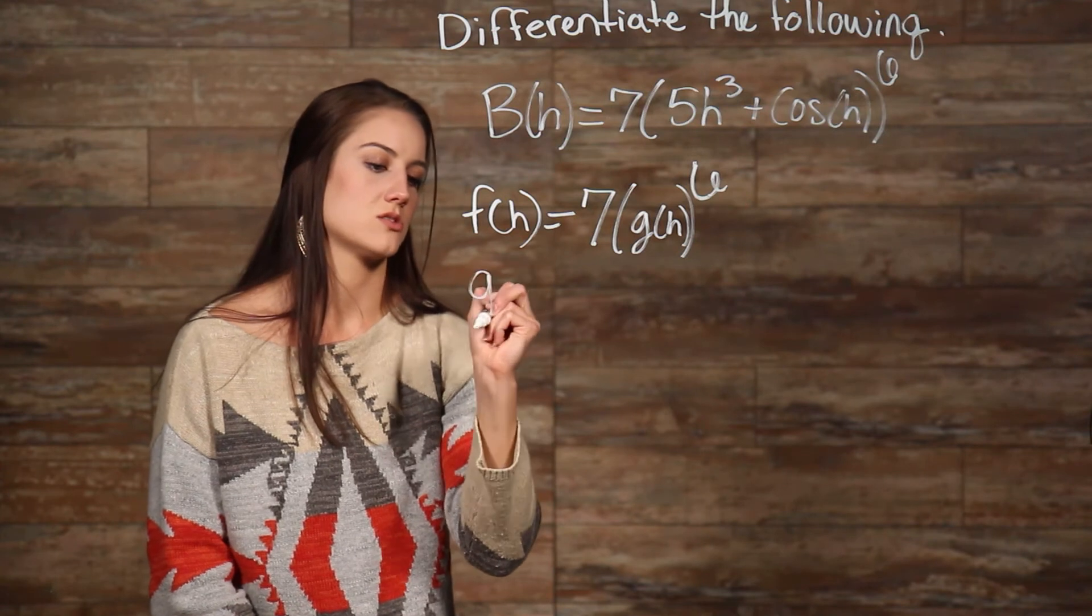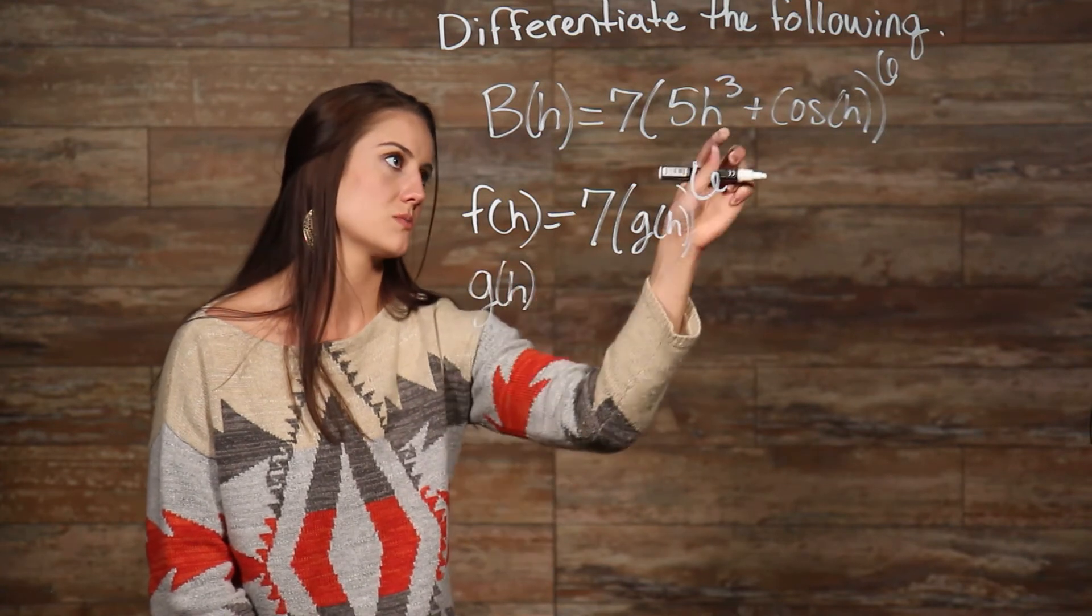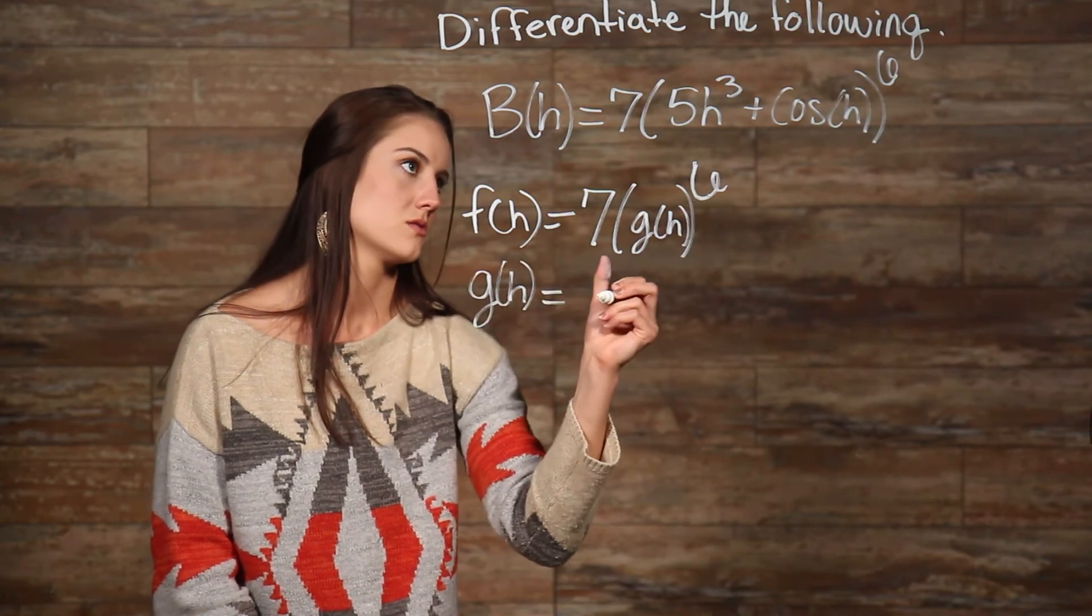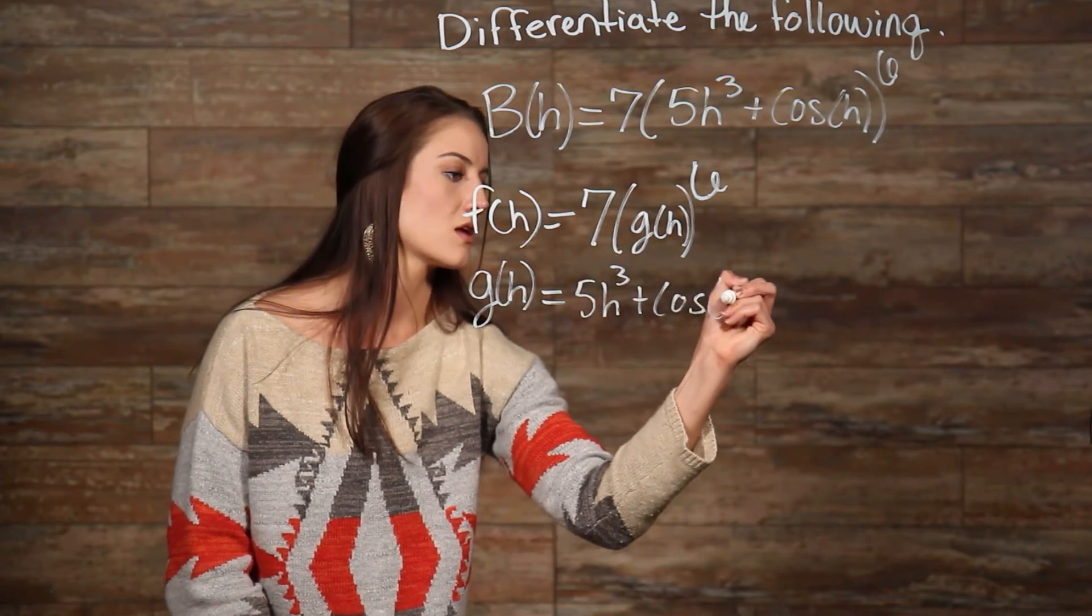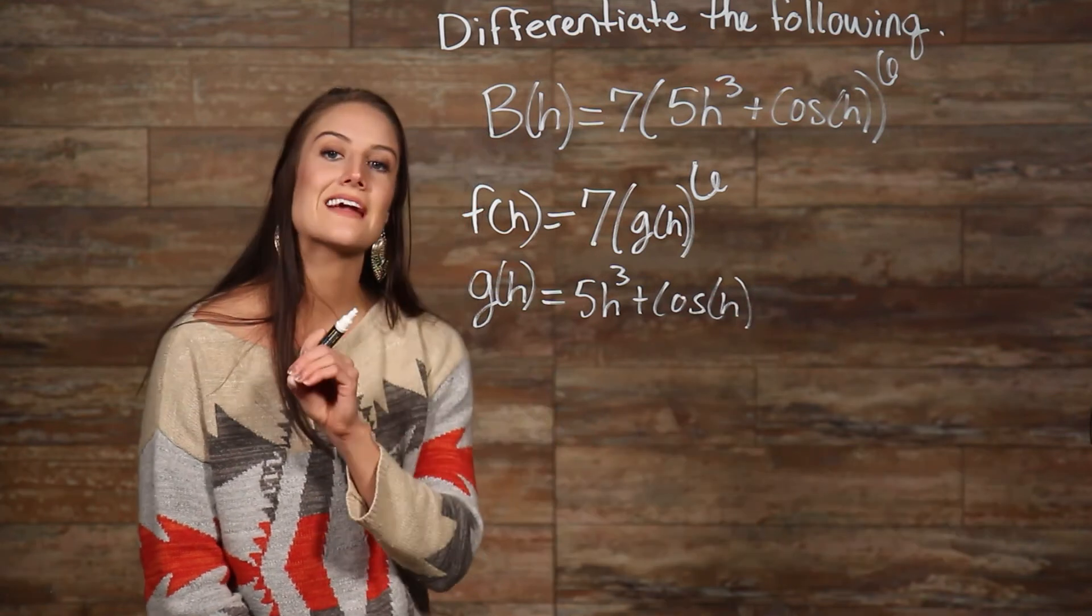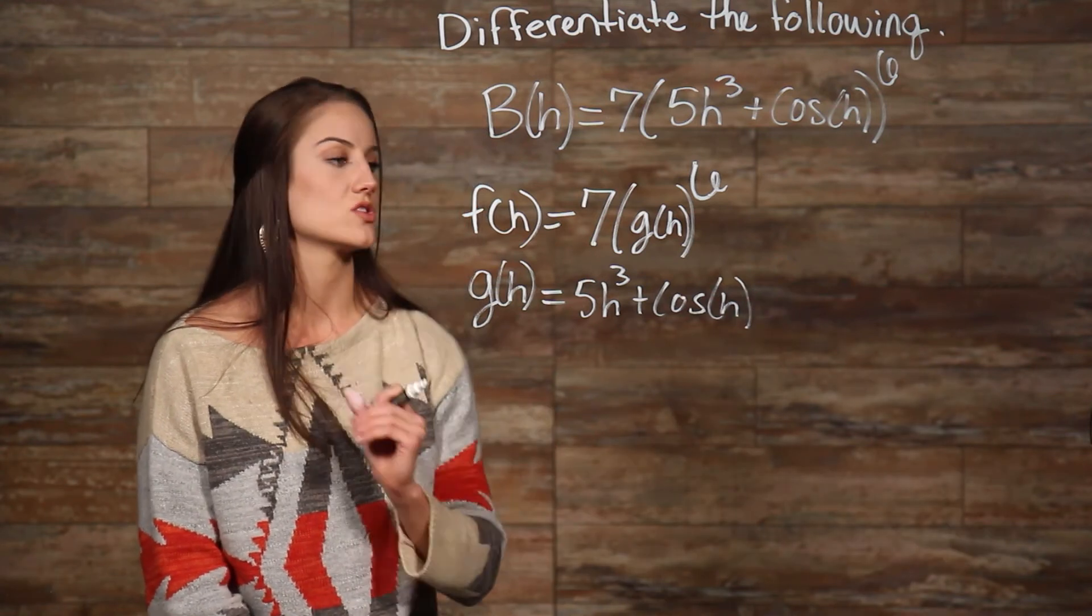I'm going to set f equal to my outside function here, so that's 7g, because that's the inside, all to the power of 6. Then I'm going to set g equal to my inside function, which is 5h to the third plus cosine of h. Now we take the derivative of our two functions.